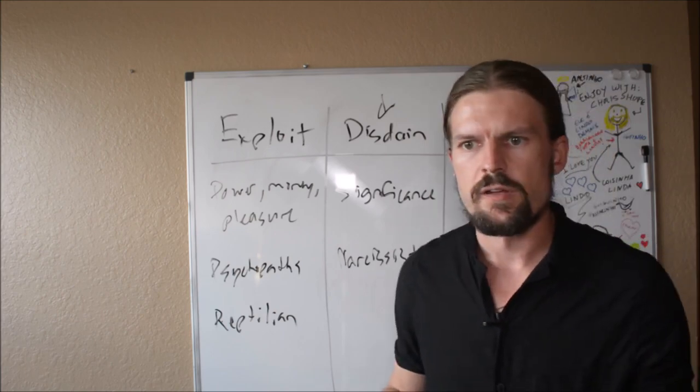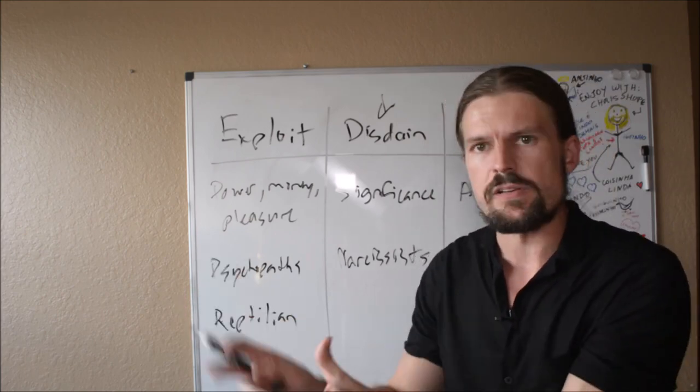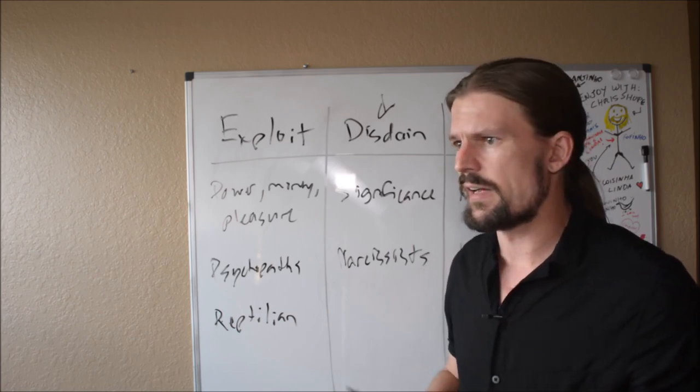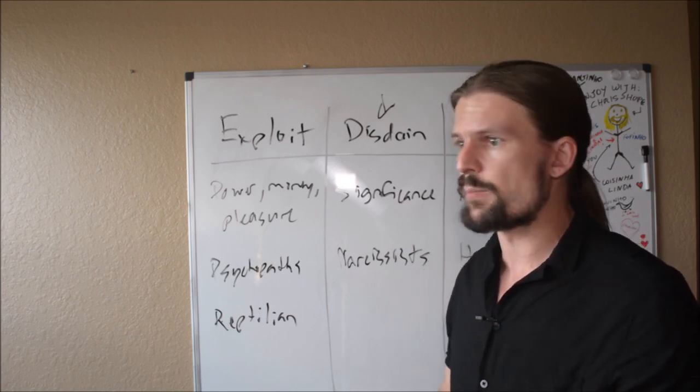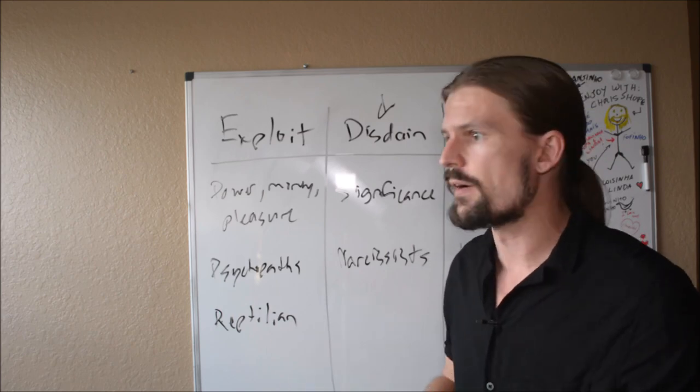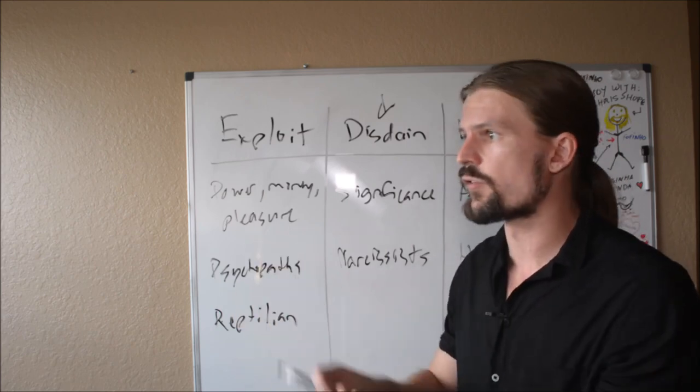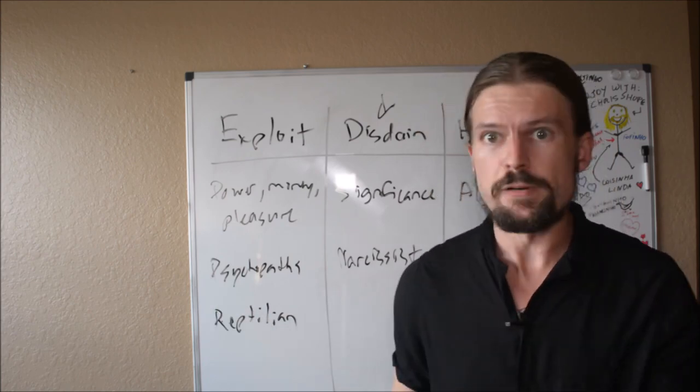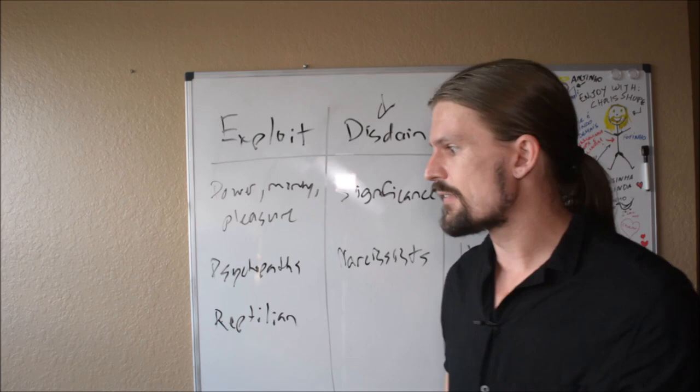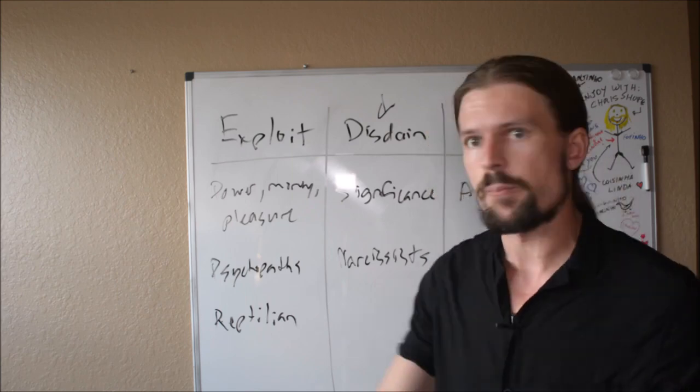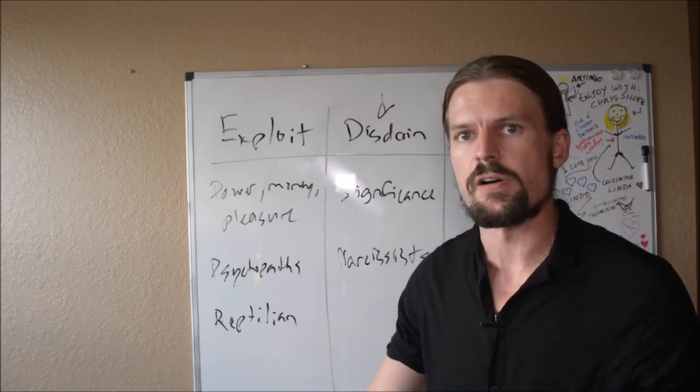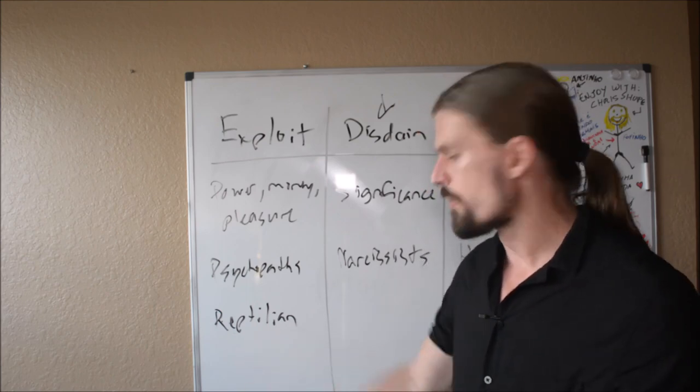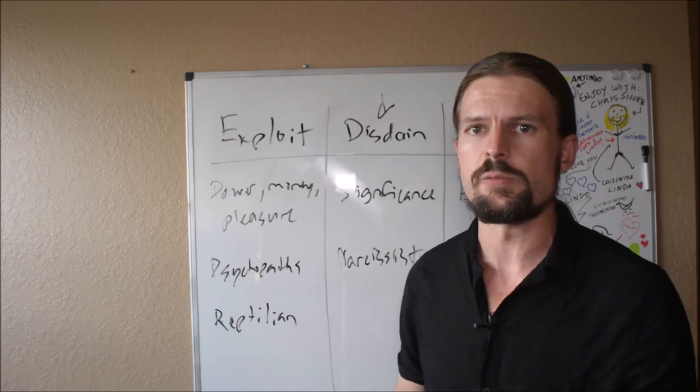Who are controlled by the reptilian part of their being. And if you think about in dreams and visions, people see images that are based on archetypes. And so I think these theories come from people's dreams and visions where they see that the people in control have reptilian-like features. And so what I really believe that that is, is that they're seeing an archetypical representation of these people based on what their motivations are. And their motivations are mostly reptilian. So actually the image makes a lot of sense.